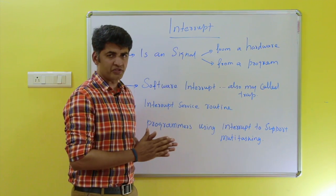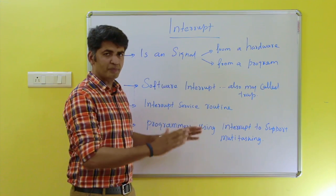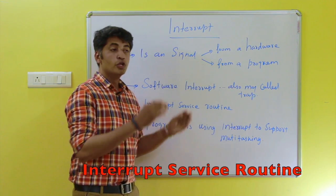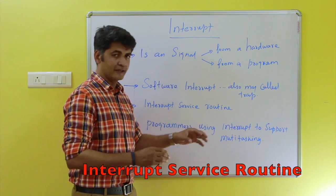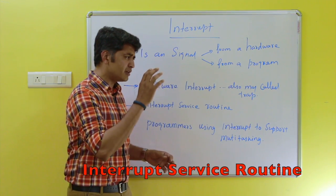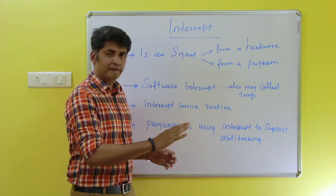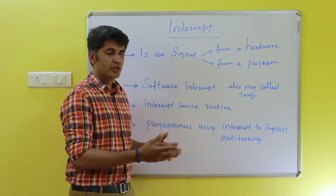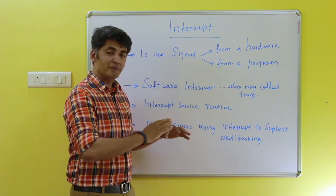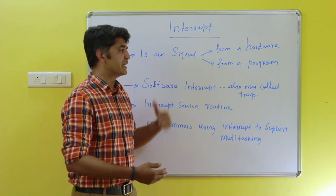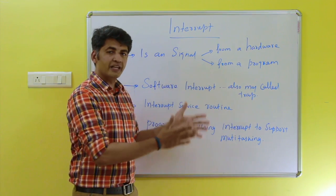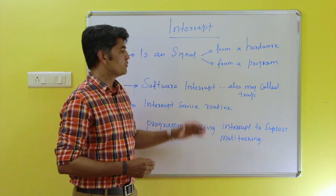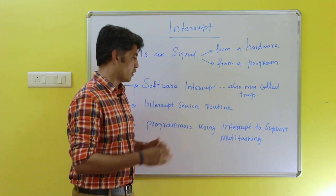The system will stop the current program execution, then find the exact interrupt service routine. Based on which type of interrupt has occurred, the interrupt service routine will be identified and executed. Then that particular interrupt will be solved, and the program execution control will be given back to the older one, and regular execution will resume. This is how a software interrupt may be solved.